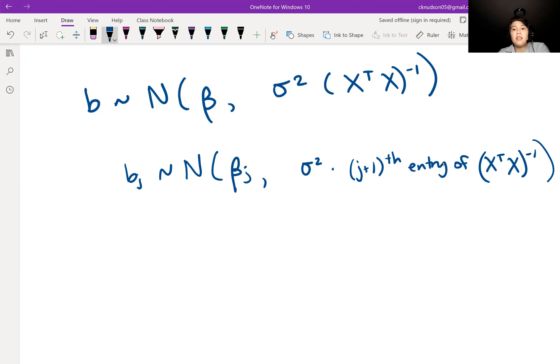So that is the distribution for the J-th component of B. We know then that we can write this as BJ minus beta J over the standard error of BJ is normal with mean 0 and variance 1.